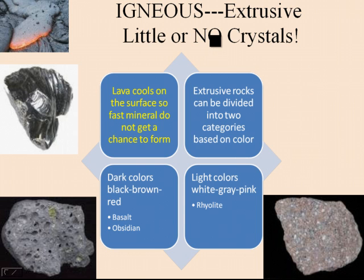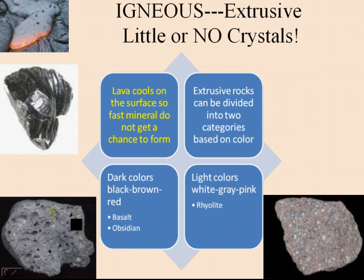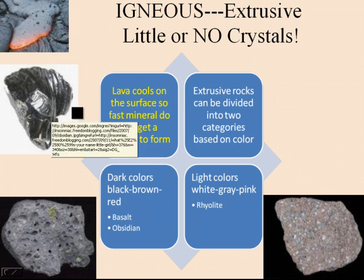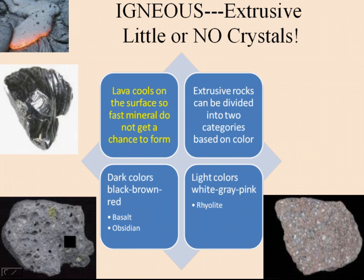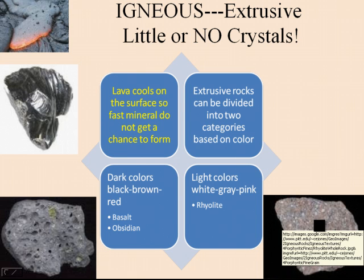The extrusive is going to have little or no crystals, where the intrusive is going to have larger and many crystals. And these here are some pictures of some extrusive igneous rocks — obsidian up here. You can see you've got some holes in here from the air bubbles from lava cooling.